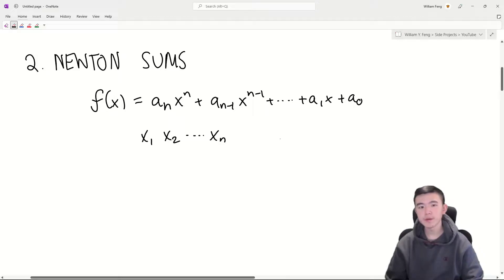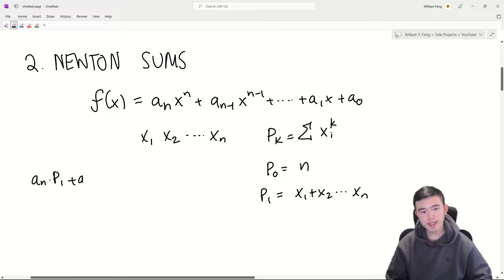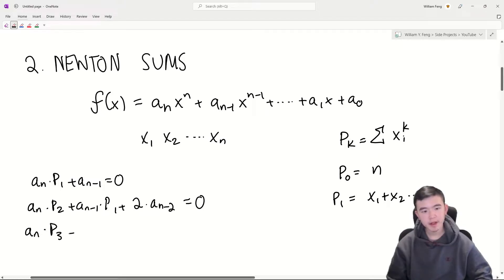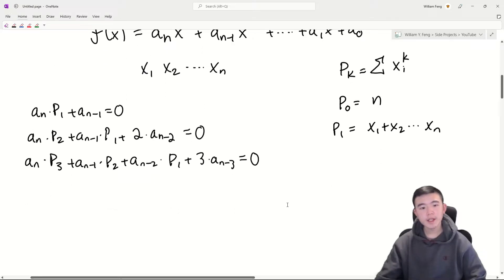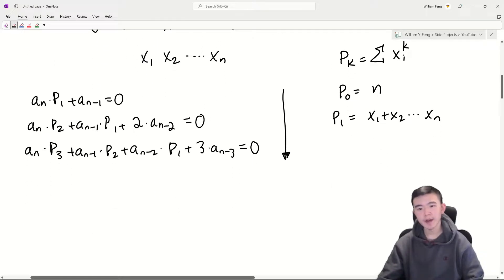Newton sums give us a nice way to find power sums. The kth power sum is described as the sum of all the roots taken to the kth power. For instance, p0 would be n and p1 would just be the sum of all the roots. Now, Newton sums are really a list of equations. The first equation goes an times p1 plus an minus 1 equals 0. The second one goes an times p2 plus an minus 1 times p1 plus 2 times an minus 2 equals 0. And the third equation goes an times p3 plus an minus 1 times p2 plus an minus 2 times p1 plus 3 times an minus 3 equals 0. These equations continue down in the same pattern as the first three.